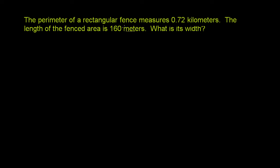The perimeter of a rectangular fence measures 0.72 kilometers. The length of the fenced area is 160 meters. What is its width? Now, the first thing that jumps out at me — it might have jumped out at you — is that they're giving us different units.